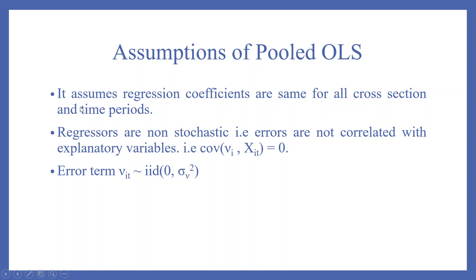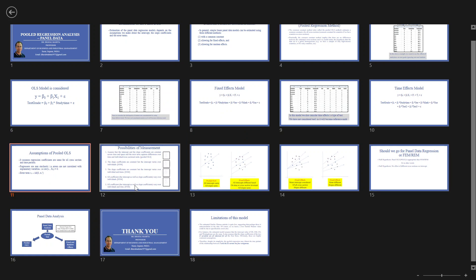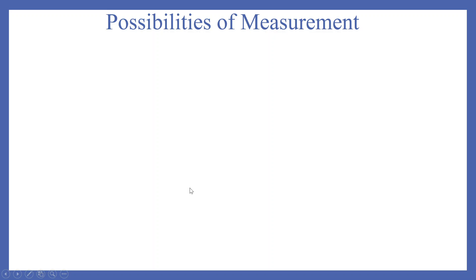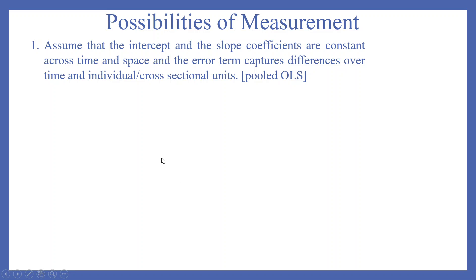Assumptions of pooled OLS: it assumes that the regression coefficients are the same for all cross-sections and time periods. Regressors are non-stochastic, meaning errors are not correlated with the explanatory variables — that is, the covariance is zero. The error term Vᵢₜ is independently identically distributed with mean zero and constant variance σ²ᵥ. The pooled OLS assumes that the intercept and slope coefficients are constant across time and space, and the error term captures differences over time and individual cross-section units.